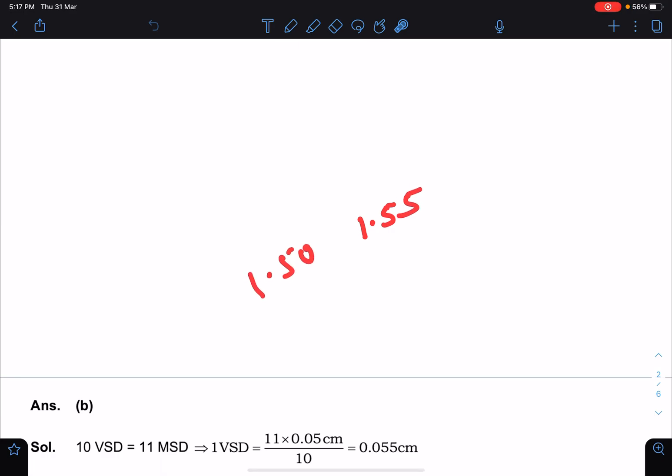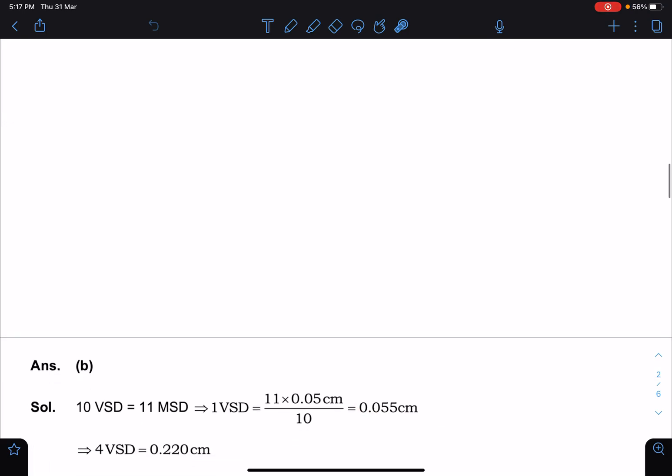Because one is given as 1.50 and the next point is given as 1.55, so 0.05 centimeter is one main scale division. That you must take care of, otherwise there may be a mistake.